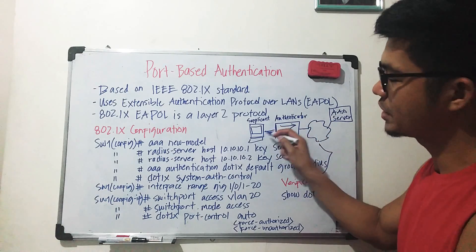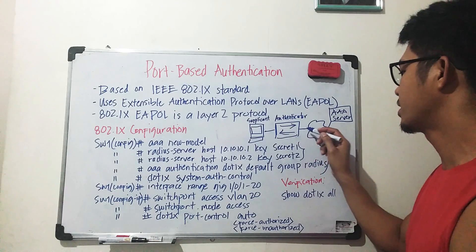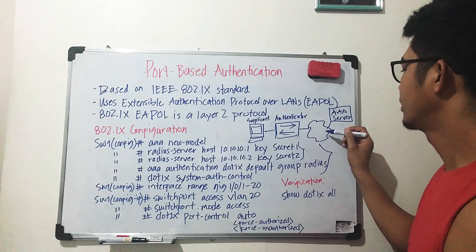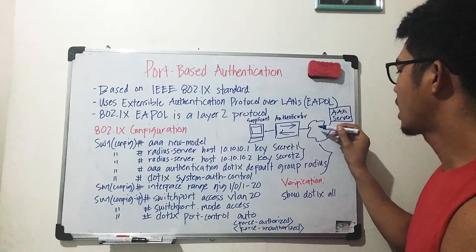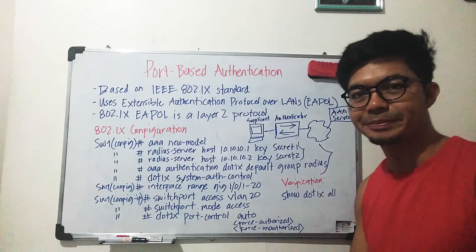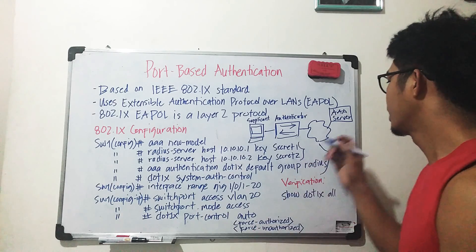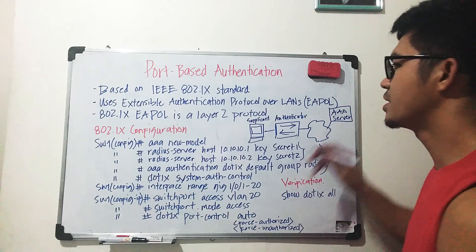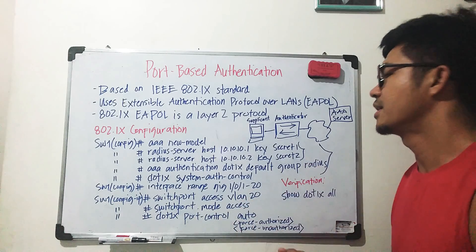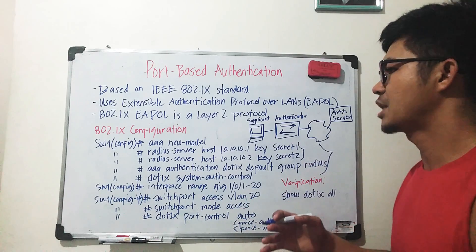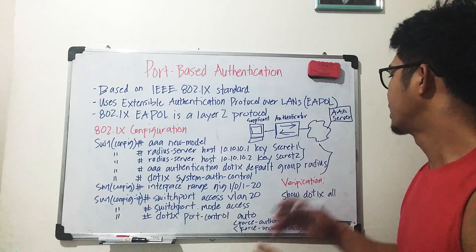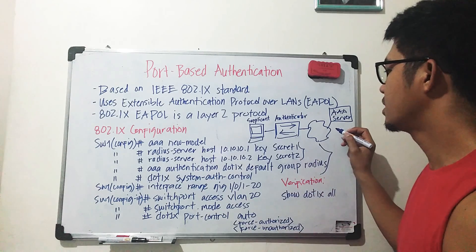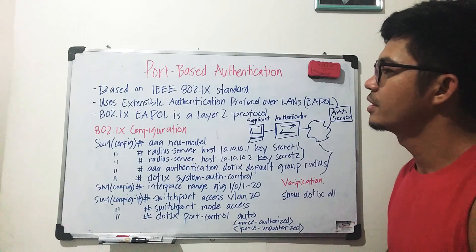And of course the RADIUS server or triple-A server acts as the AAA server. In this diagram, the switch is connected to the cloud — basically routers — and this triple-A server could be located in another building or in the same building, but could be in another network.